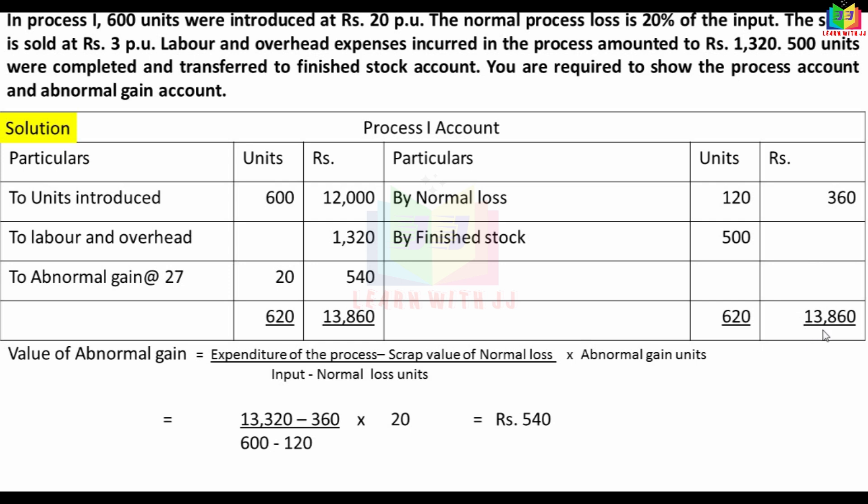The balancing figures in the process account are: total credits = Rs.13,860; scrap value of normal loss = Rs.360; and finished goods transfer = Rs.13,500.